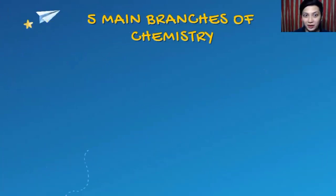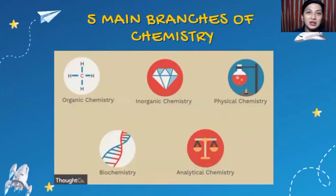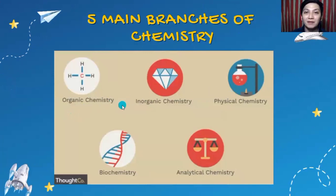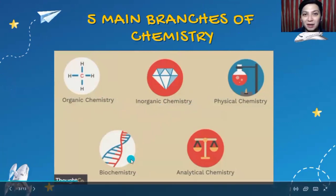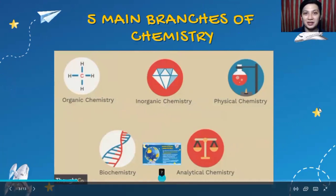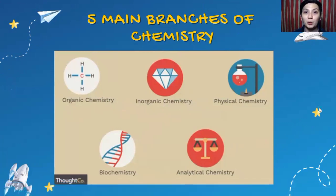So to start with, there are five main branches of chemistry. Number one, we have organic chemistry, then we have inorganic chemistry, we have physical chemistry, we have biochemistry, and last, we have analytical chemistry. So on this topic, we are going to differentiate from one branch to another branch of chemistry.